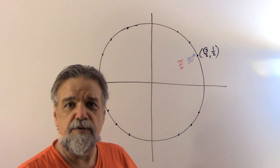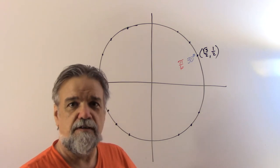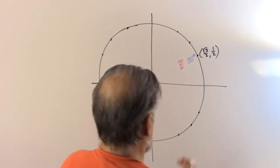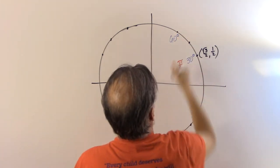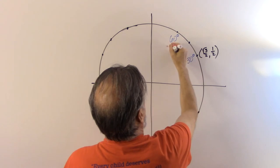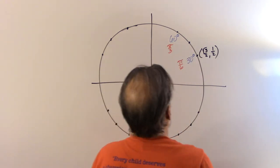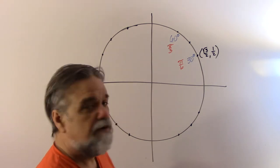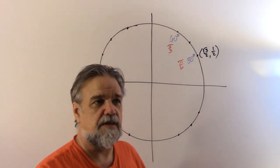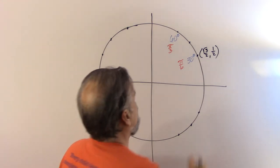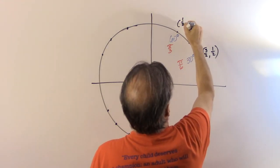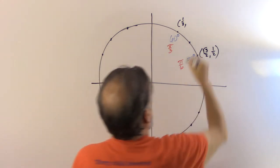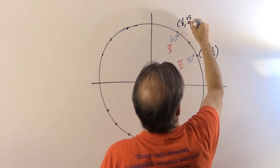The sine of 30 degrees is the same as the cosine of 60 degrees. And 60 degrees is right up here — we would call that π/3 in radians. The coordinates of that point: the cosine of 60, which is the same as the sine of 30, would be 1/2; and the sine of 60, which is the same as the cosine of 30, would be √3/2.